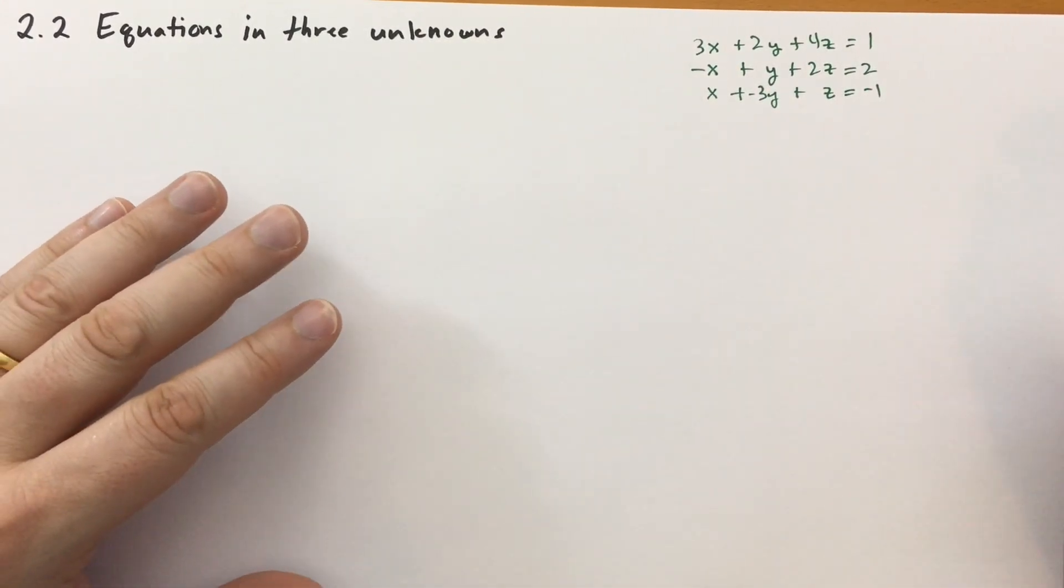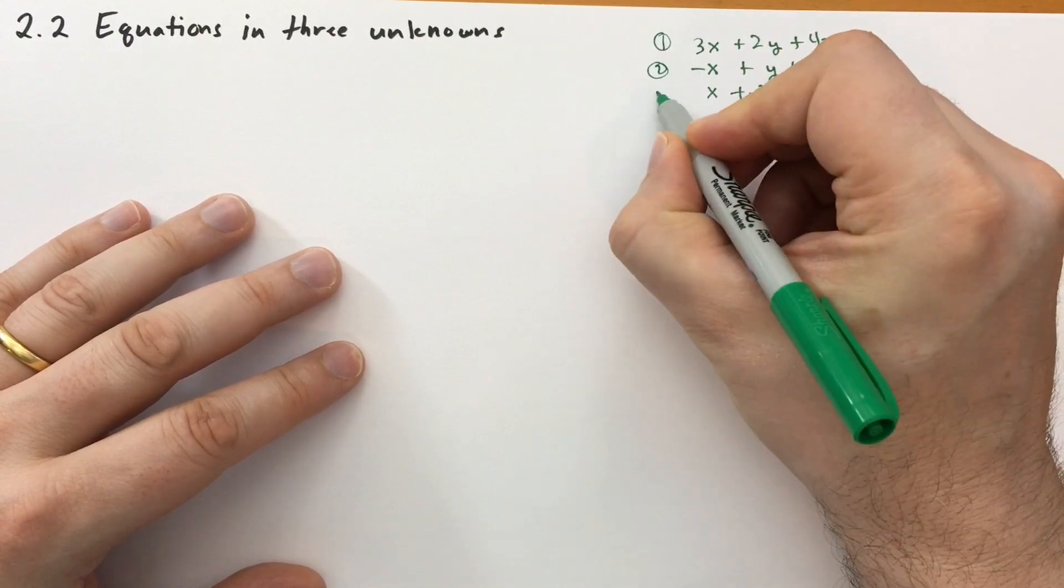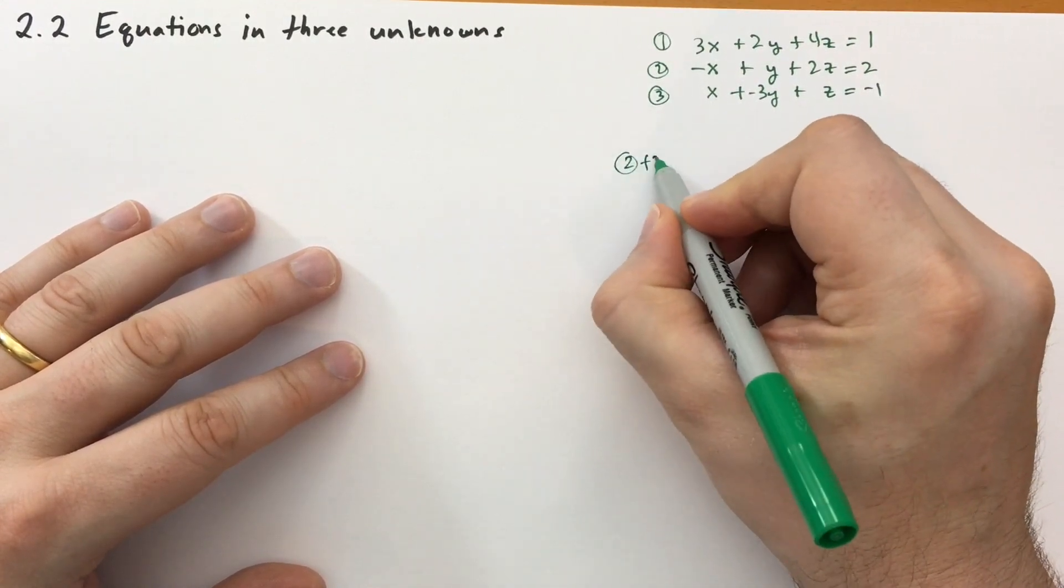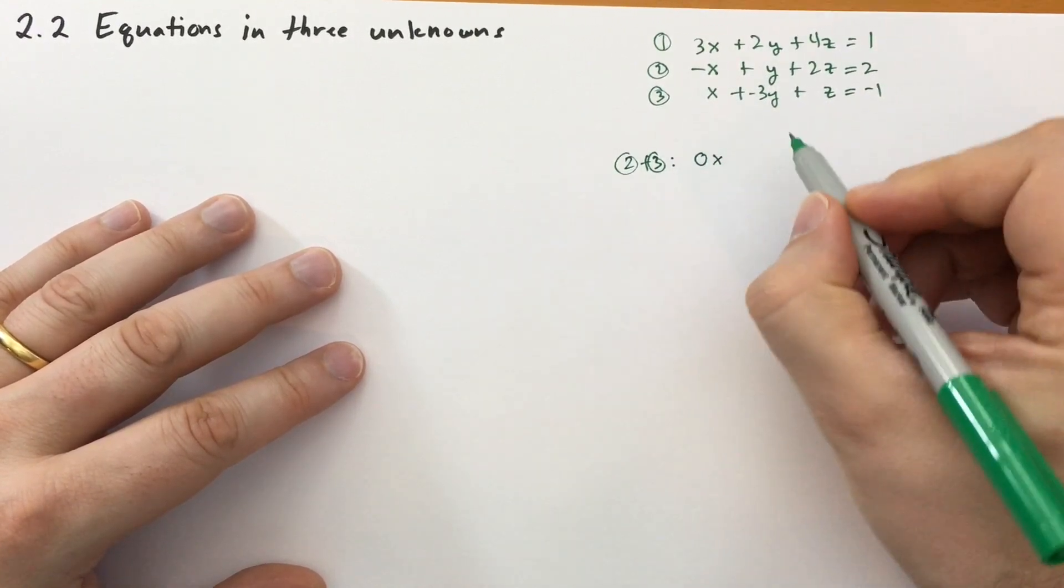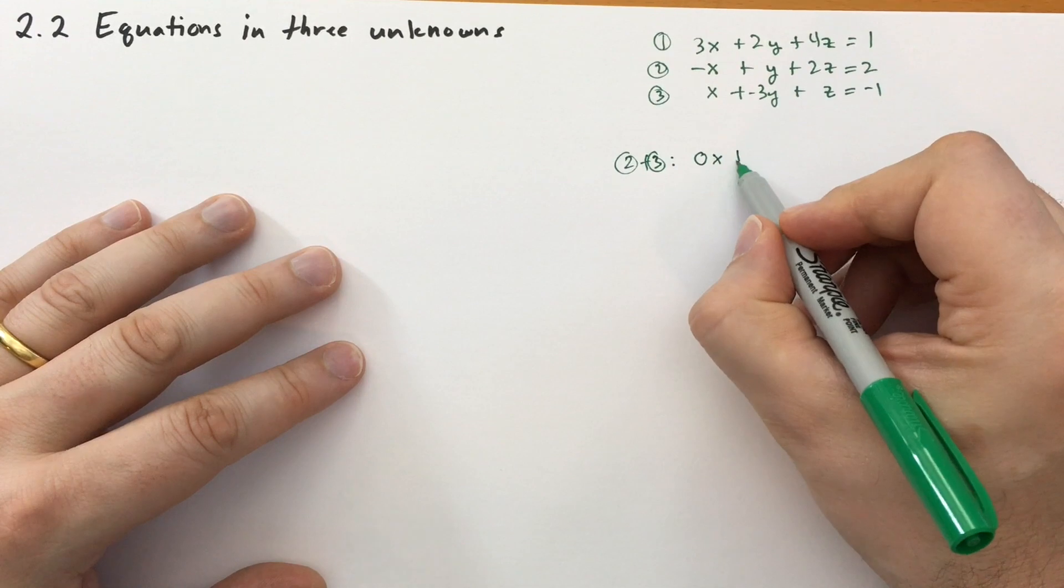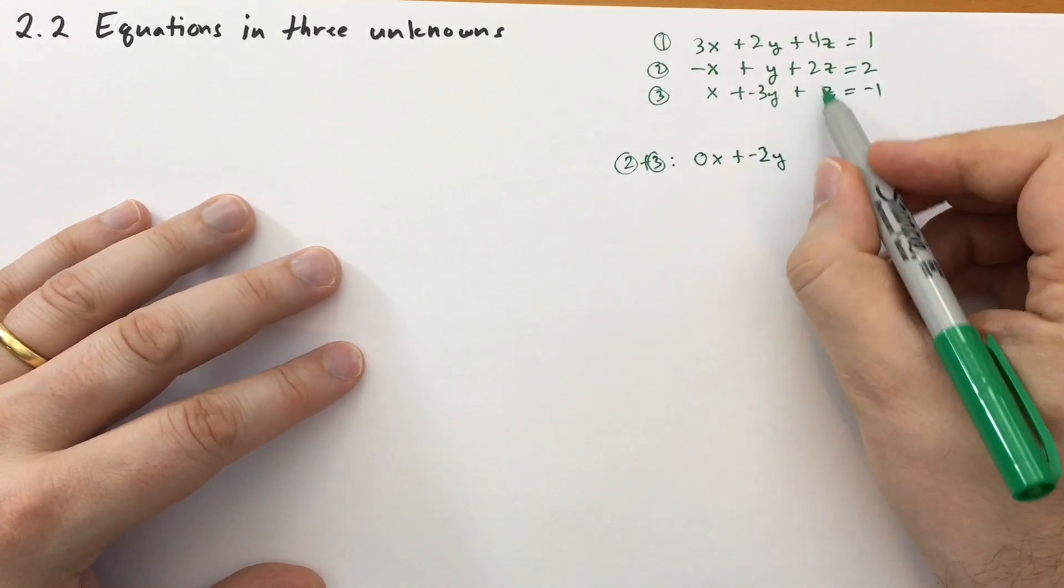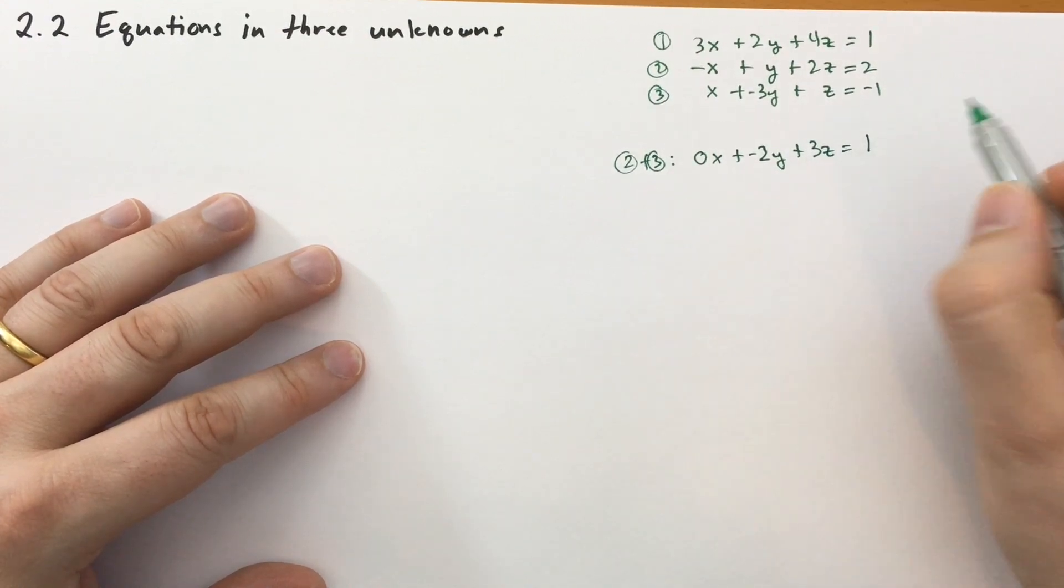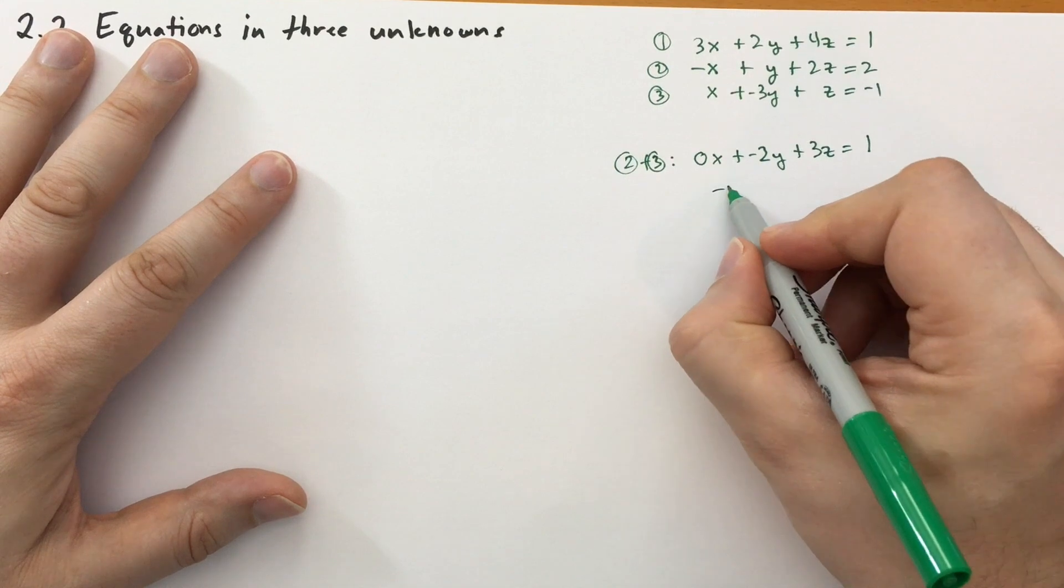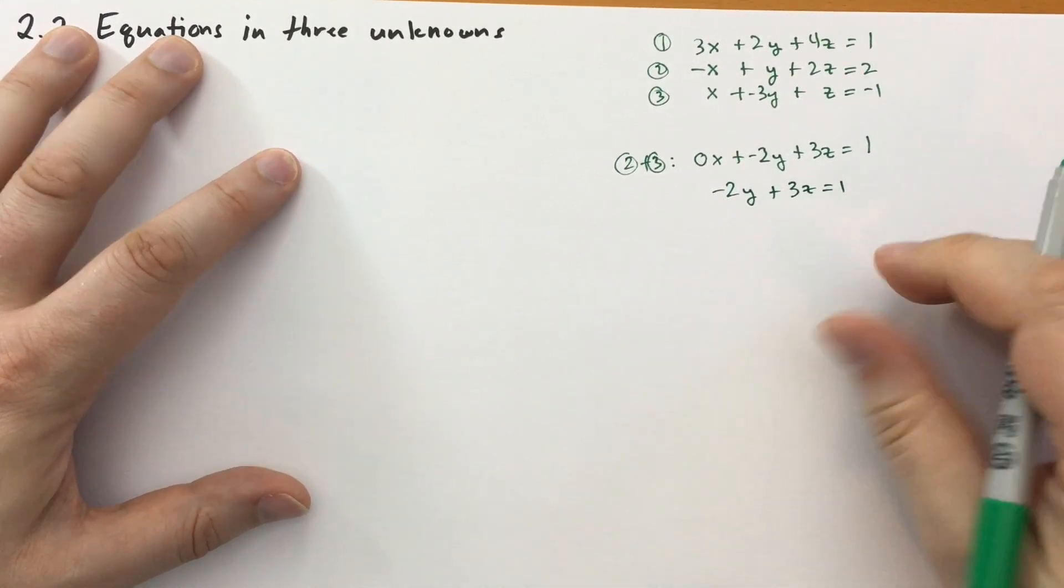Let's add the second and third equations together. So let's call this one 1, let's call this 2, and let's call this 3. So if we're going to add 2 plus 3 together, we're going to get minus x plus x is 0x, minus 3y plus y is minus 2y, and then 2z plus 1z is 3z, and then 2 minus 1 is just 1. Okay, so there's one equation. Minus 2y plus 3z is equal to 1.